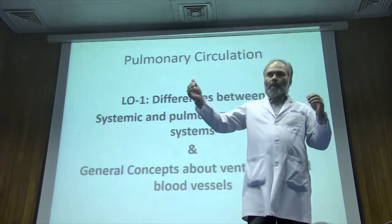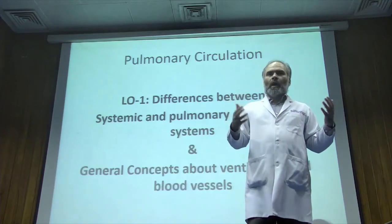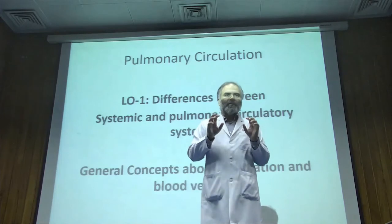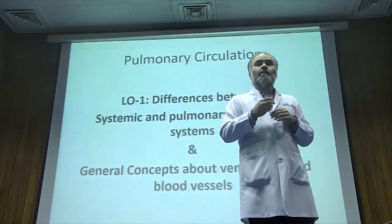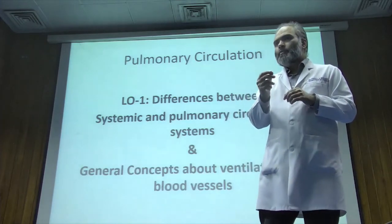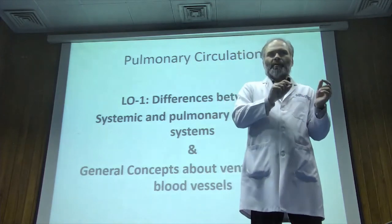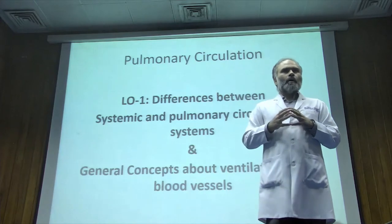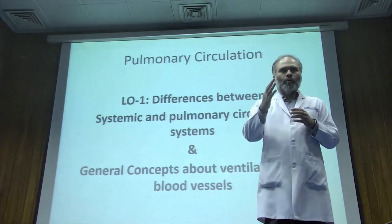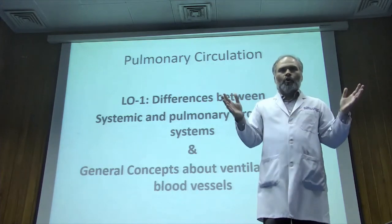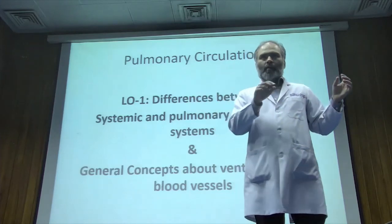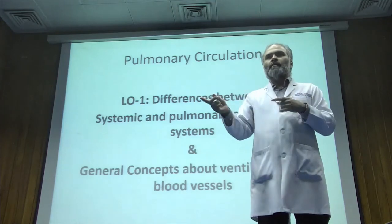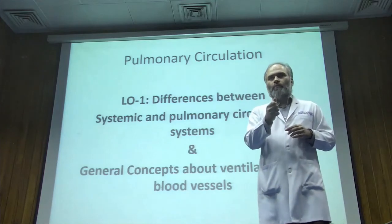How these two flows — blood flow and airflow, or ventilation — are physically arranged is the focus of chapter two. We need to understand certain peculiarities of the pulmonary vasculature, which is different from systemic circulation in two or three very important ways. An examiner can ask about these differences in a viva, where lists are expected: list the three differences between pulmonary and systemic circulation.